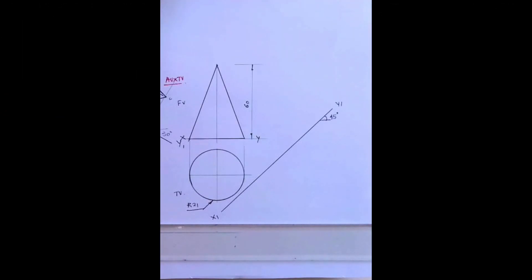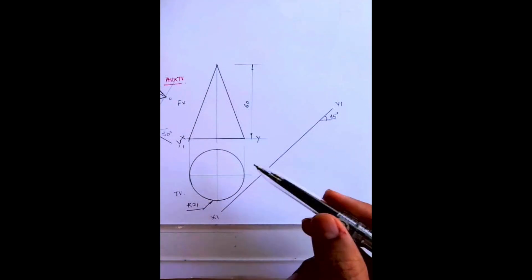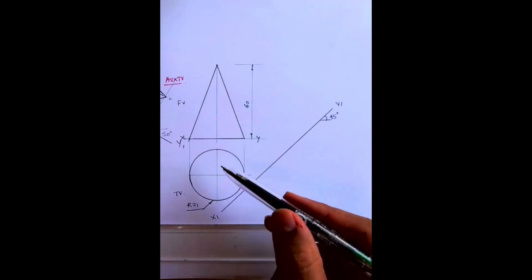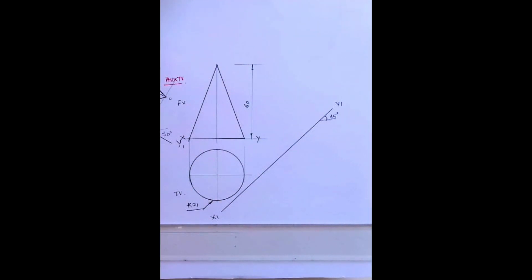Welcome to technical drawing. Today we're going to solve this problem in auxiliary. See, this is front view, top view, and we have to draw auxiliary top view over here. So first we will draw the given two views and we'll draw auxiliary line at 45 degree.